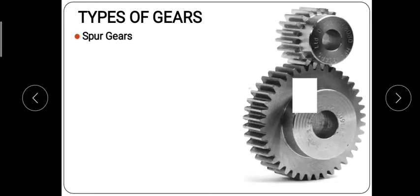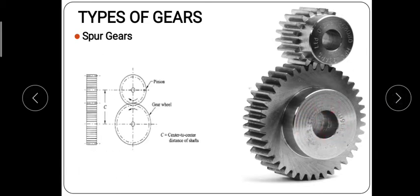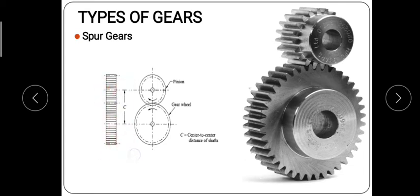The first type of gear is the spur gear, in which the axes of the driving and driven gears are parallel to each other. The teeth of the gear wheels are parallel to the axis of the shaft. You can see that this pinion gear and the gear wheel are connected to their respective shafts, and the center-to-center distance is the distance between the two shafts.